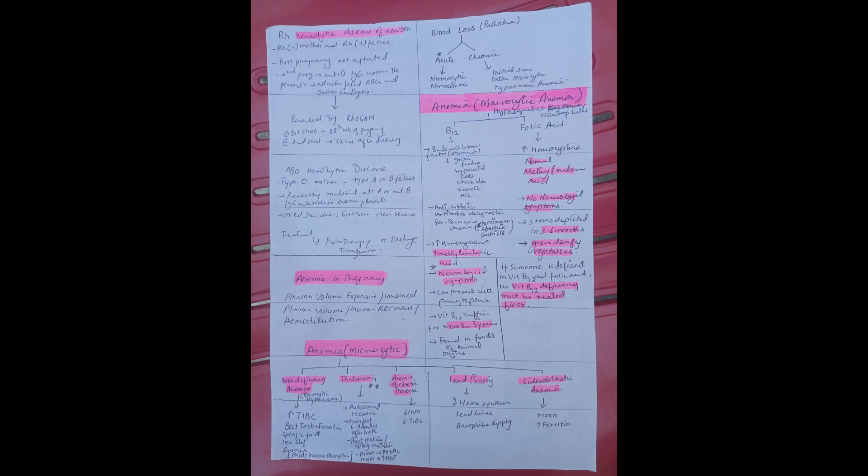In subsequent pregnancies, these antibodies cross the placenta to fetal RBCs, which are Rh positive RBCs. They cause hemolysis in the fetus.